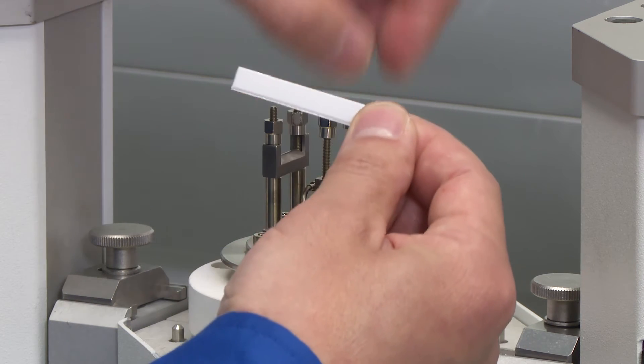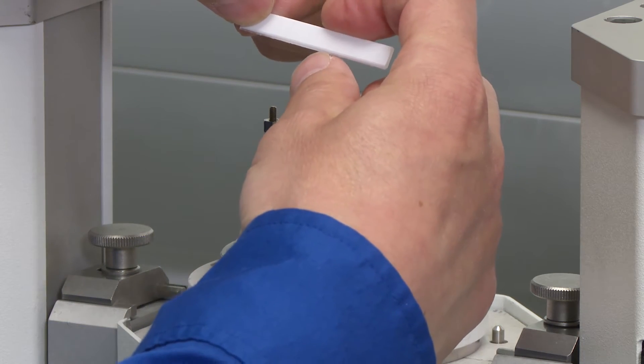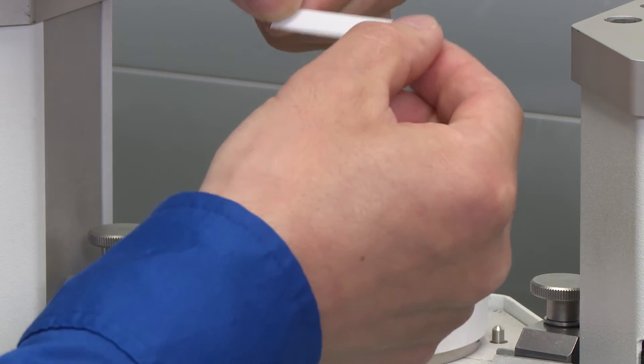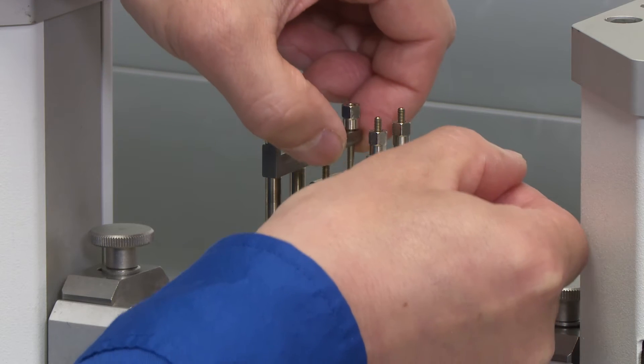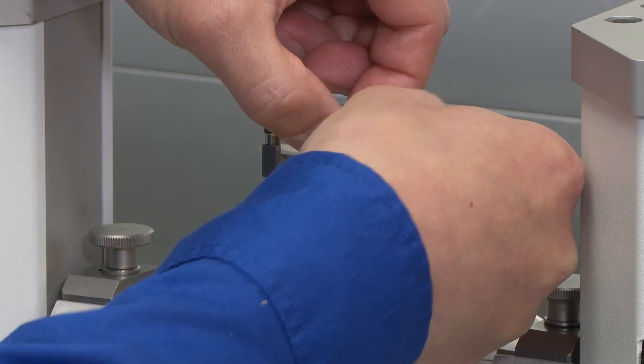Before sliding the sample in, we want to measure the sample width and thickness. Then we can put the sample in under the center knife.